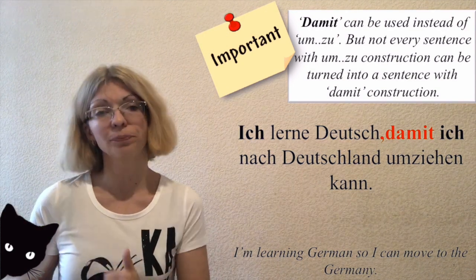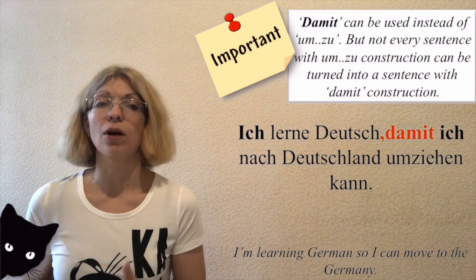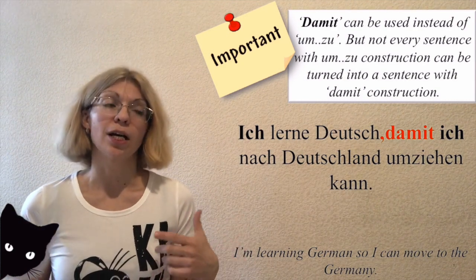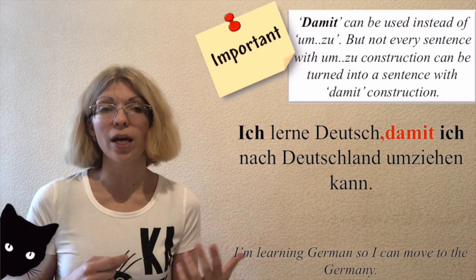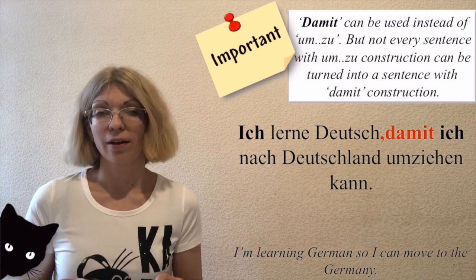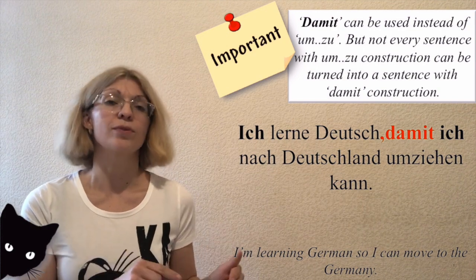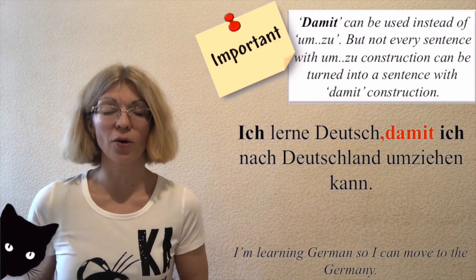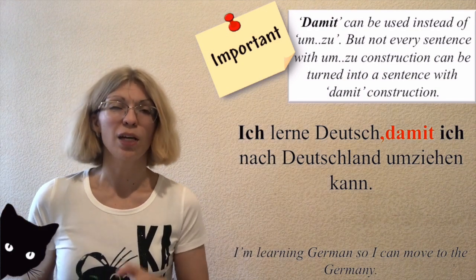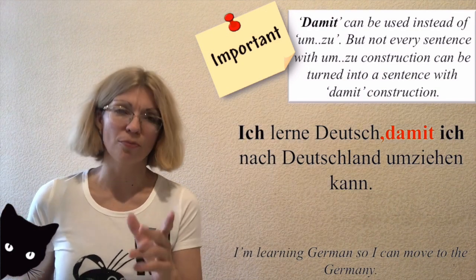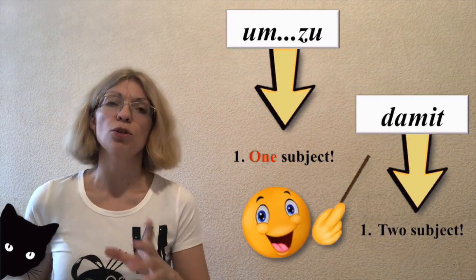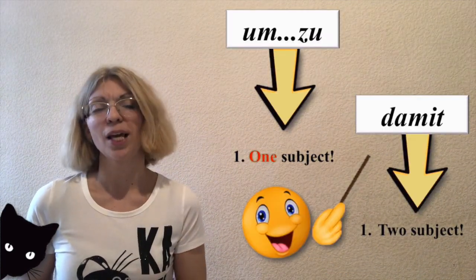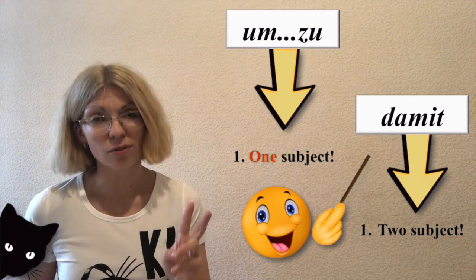Not every sentence with 'um zu' can be turned into a sentence with 'damit'. To understand where you can and can't do this takes time, because only native German speakers can feel the right way. So if you're just starting to learn German, just remember: use 'um zu' if there is one subject, and use 'damit' if there are two different subjects.